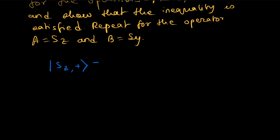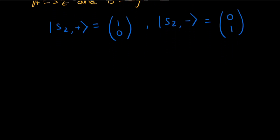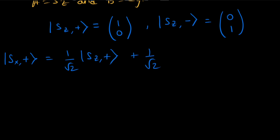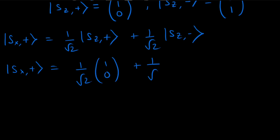The state |sz+⟩ can be written as (1, 0) and the state |sz−⟩ can be written as (0, 1). Now we can write the state |sx+⟩ in terms of |sz+⟩ and |sz−⟩: |sx+⟩ = (1/√2)|sz+⟩ + (1/√2)|sz−⟩. In matrix representation this gives (1/√2)(1, 1).